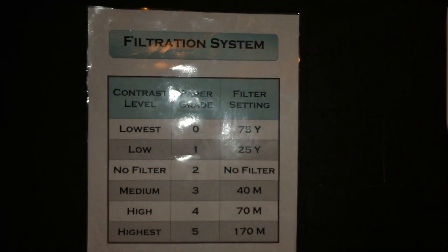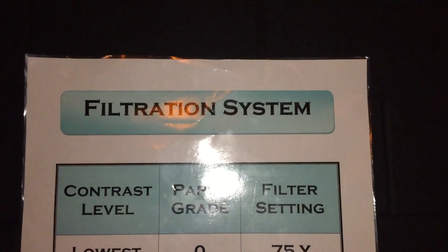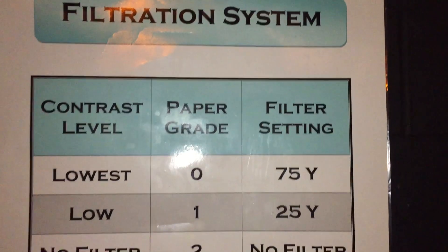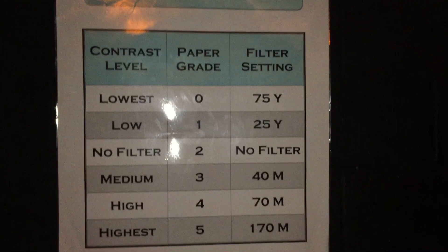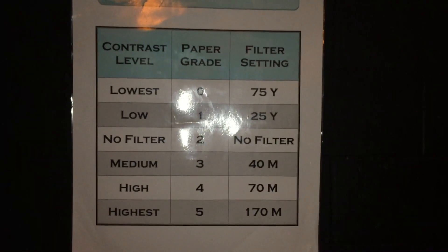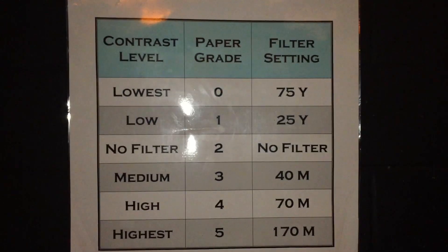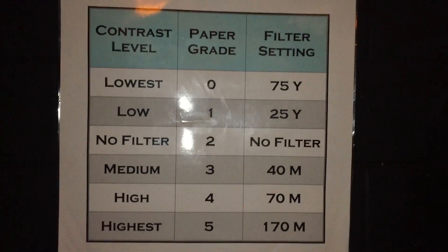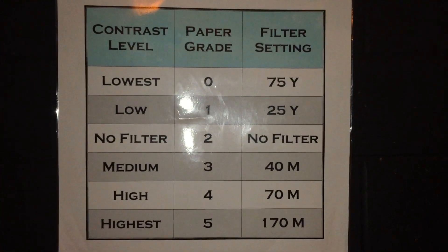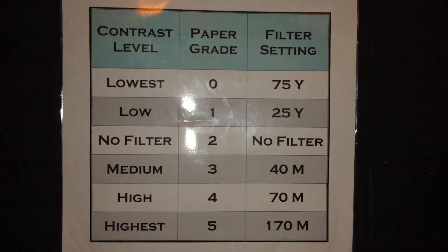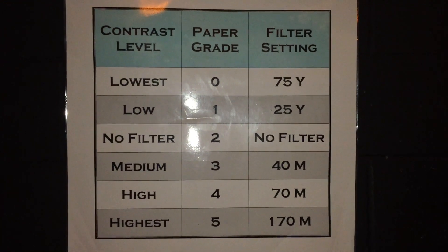This chart on the back wall of the darkroom goes over the filtration system and how to set your different filters for different levels of contrast. The paper grade refers to the level of contrast — grade two is equal to no filter at all, and typically we're increasing the amount of contrast.